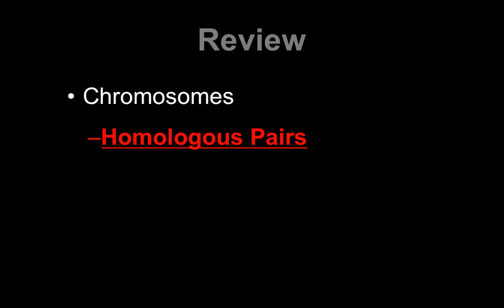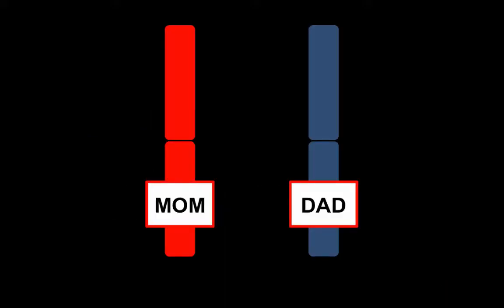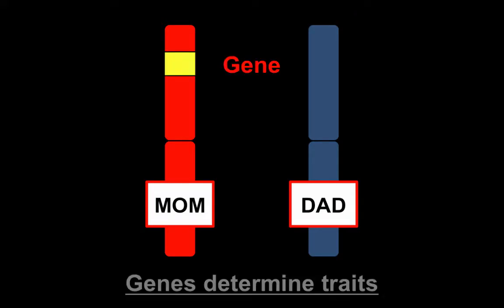As a review, remember chromosomes come as homologous pairs. You get one copy of each chromosome from mom and one copy from dad. When we look at these chromosomes, they both have the same gene, and our genes determine traits. Because you get one from each parent, you have two copies of every gene. This is going to be really important when we start talking about how these are inherited and how they interact.